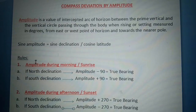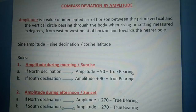Rules. Number one: Amplitude during morning or sunrise. Letter A: if north declination, amplitude minus 90 degrees equals true bearing. Letter B: if south declination, amplitude plus 90 degrees equals true bearing.